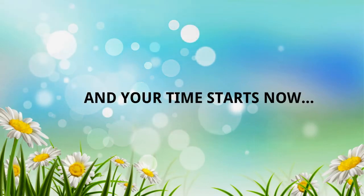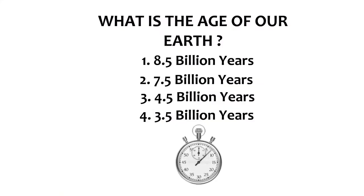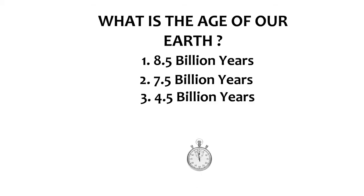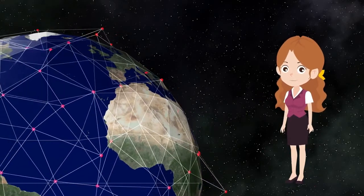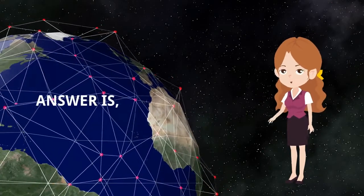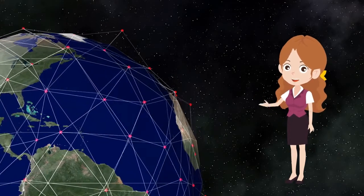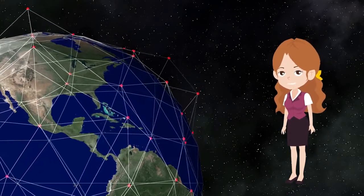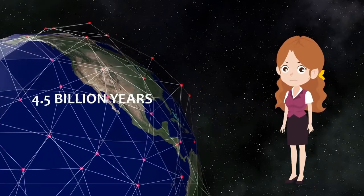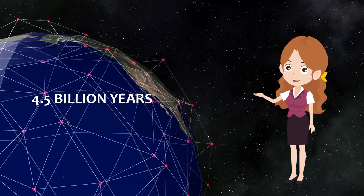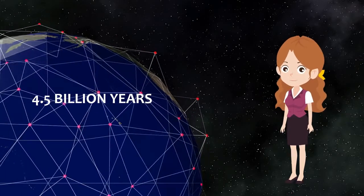Your time starts now. Now we will see the correct answer for our second basic level question. If you found the answer, let's check if it's right or wrong. The answer is Option 3 — four point five billion years. If your answer was this, you're smart!